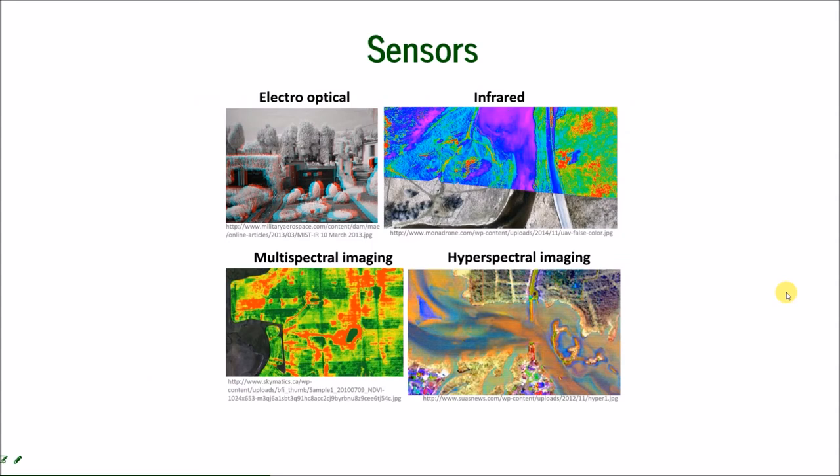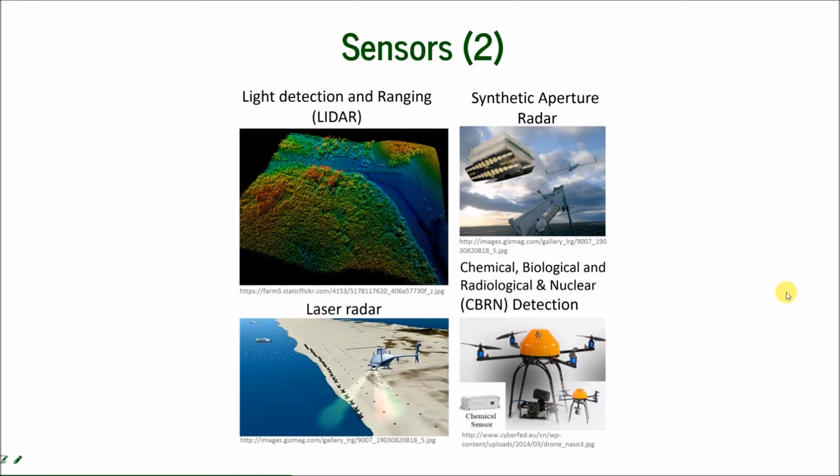What are the sensing payloads? We're going to focus on them more later. Just for the overview, there are some that are optical, electro-optical, infrared, multispectral and hyperspectral imaging. All of them are widely used for mapping purposes. There are some active sensors like laser radar or the LIDAR or SAR, synthetic aperture radar. But there are also some sensing payloads that are collecting data about chemical, biological, radiological and nuclear detection. So it doesn't need to be used only for mapping.